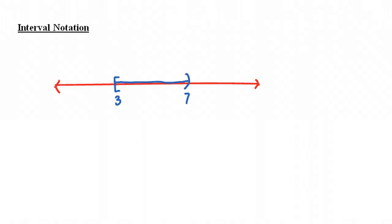Let's suppose we have an interval here from 3 to 7. The interval includes 3 — it's closed at 3 — but it does not include 7. If we were writing our solution the way we have been writing it, this is assuming our variable is x. If our variable were p we would put a p, if it were an m we would put an m, and so forth. So this just means that x is greater than or equal to 3 and it's less than 7.